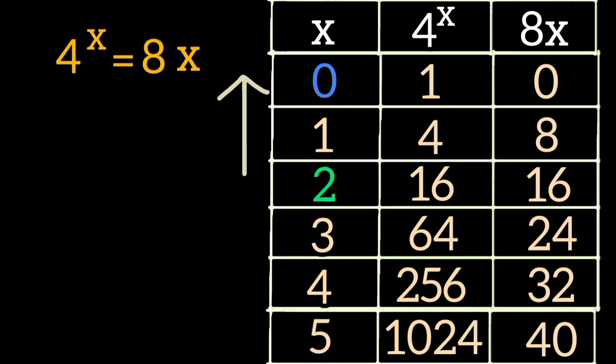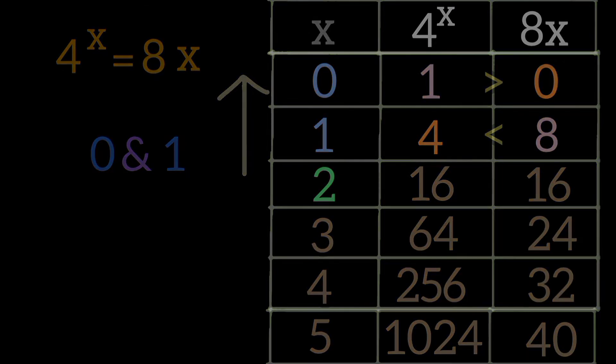Since we've eliminated the possibility of a solution greater than 2 being present, let's check for numbers ranging from 1 to 2. When x is 0, you can clearly see that 4^x is greater than 8x. But when x is 1, the value of 4^x now becomes less than 8x. What does this tell us? It tells us that there is indeed a solution between 0 and 1.